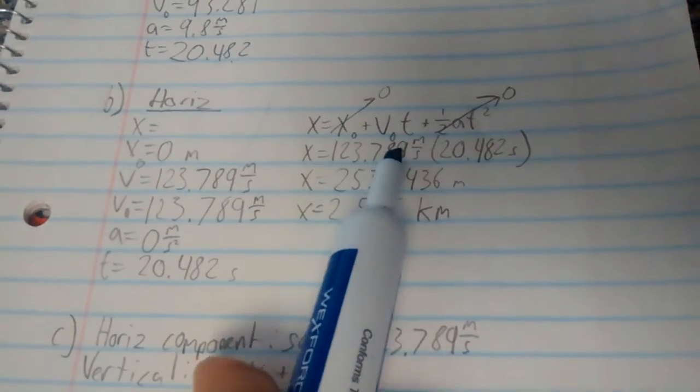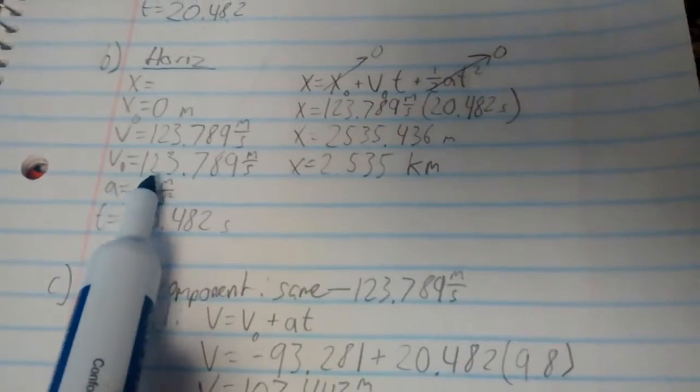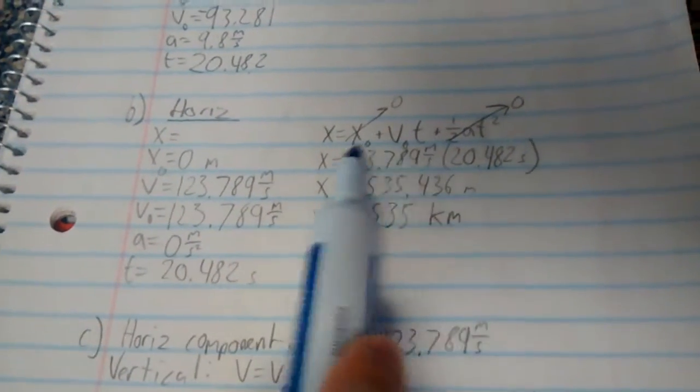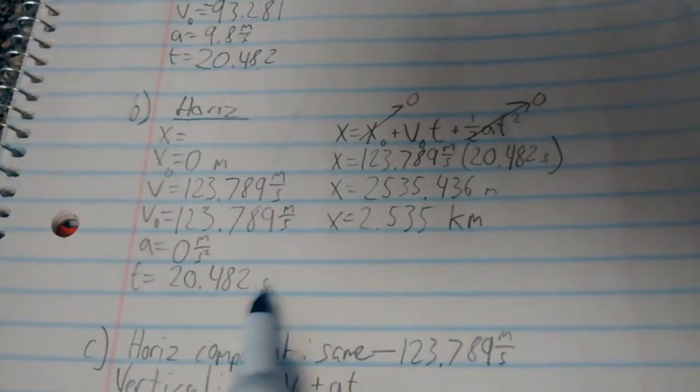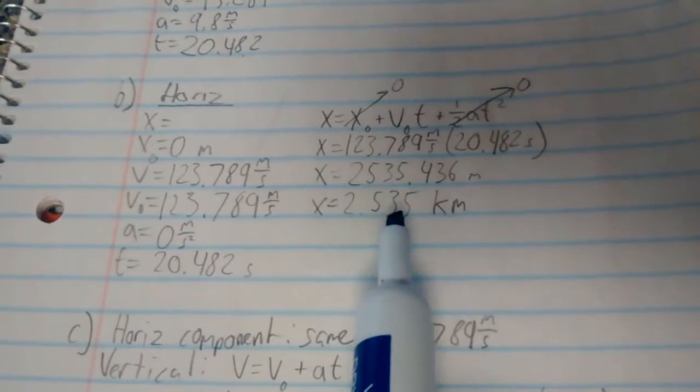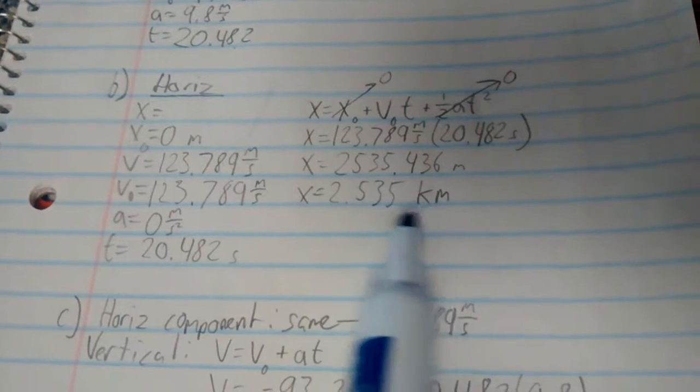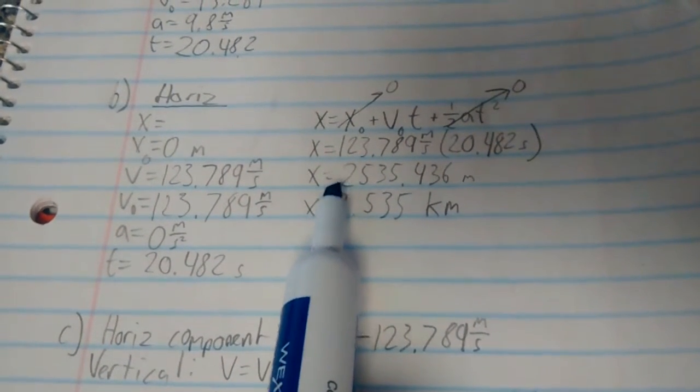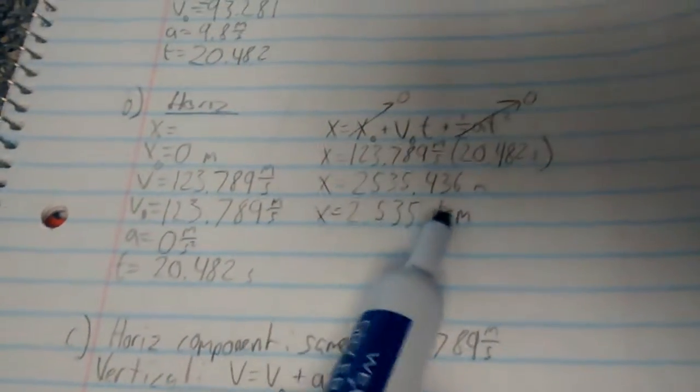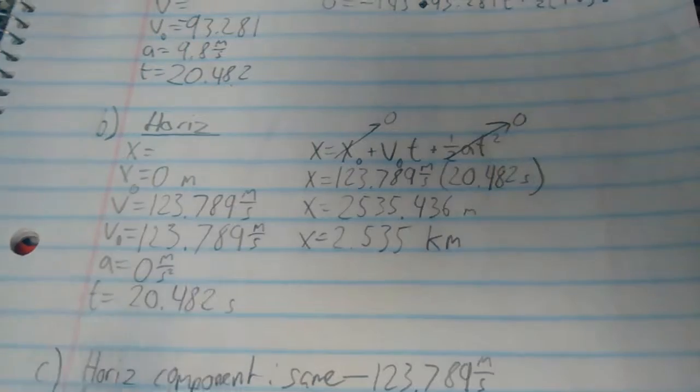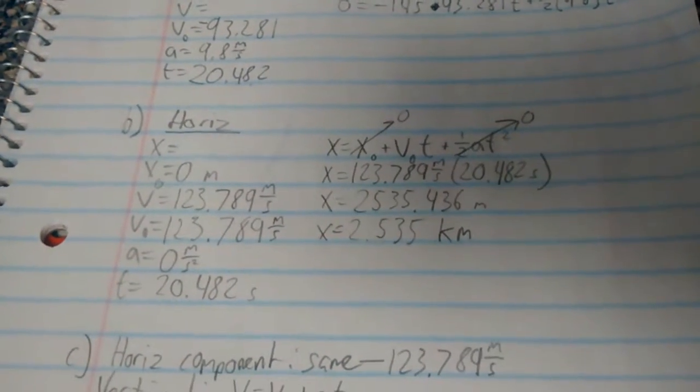When I substitute in, for v0, 123.789 meters per second, and for t, 20.482, what we solved for earlier. And I'll save you the calculations. And I get 2,535.436 meters, which is the same thing as 2.535 kilometers. And our problem, it asks us to solve it in kilometers.